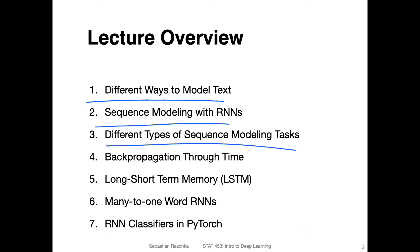Then I will discuss different types of sequence modeling tasks, because there's more than just text classification. And then we will talk about back propagation through time — this is like a modified version of the back propagation that we already talked about in the context of multilayer perceptrons and convolutional networks. And then we will talk about long short-term memory, which are specific cells for recurrent neural networks that help with processing longer sequences.